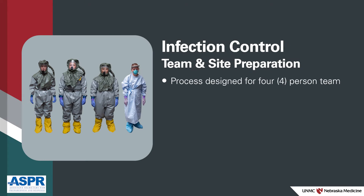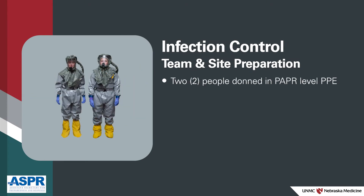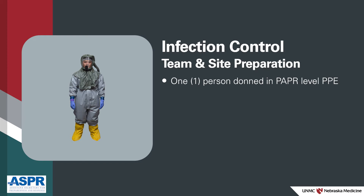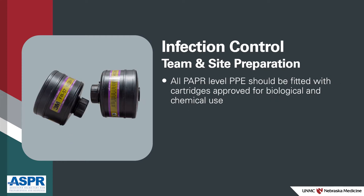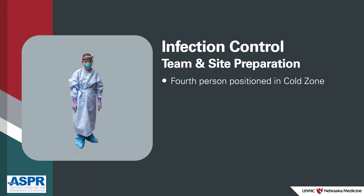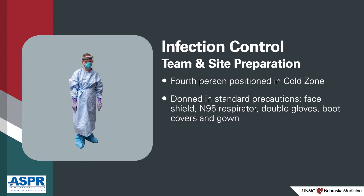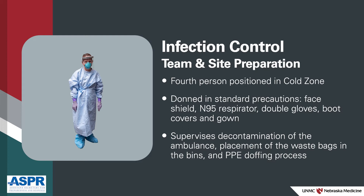This process is designed for a four-person team. Two people will be donned in PAPR level PPE and work within the hot zone. One person donned in PAPR level PPE will start working within the warm zone, transitioning to the hot zone when the plastic sheeting has been removed. All PAPR level PPE should be fitted with filter cartridges approved for biological and chemical use. The fourth person will be positioned in the cold zone, donned in standard precautions including a face shield, N95 respirator, double gloves, boot covers and gown. This person will supervise the decontamination of the ambulance, placement of the waste bags in the bins, and supervise the PPE doffing process.